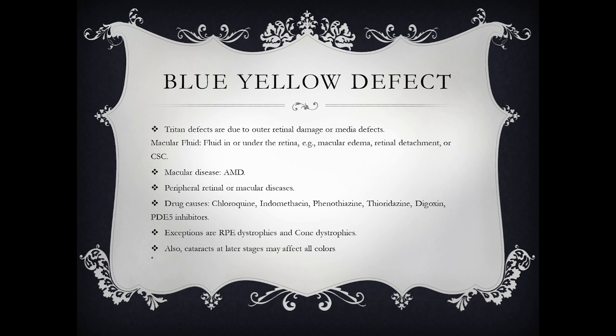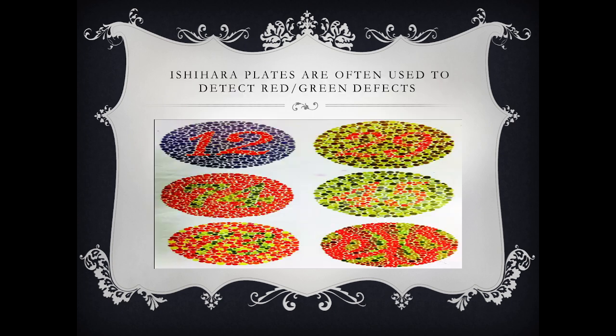Exceptions are the retinitis pigmentosa dystrophies and cone dystrophies. Also, cataract at a later stage may affect all colors; as a media opacity, it primarily produces a blue-yellow defect.